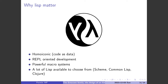The first one is homoiconic — the code is data, basically. There's also a REPL, a read-eval-print loop, that is very powerful and can help in development. A good Lisp should have a powerful macro system. Compile-time macros are good, but reader-time macros are also interesting. There are a lot of Lisps you can choose from.